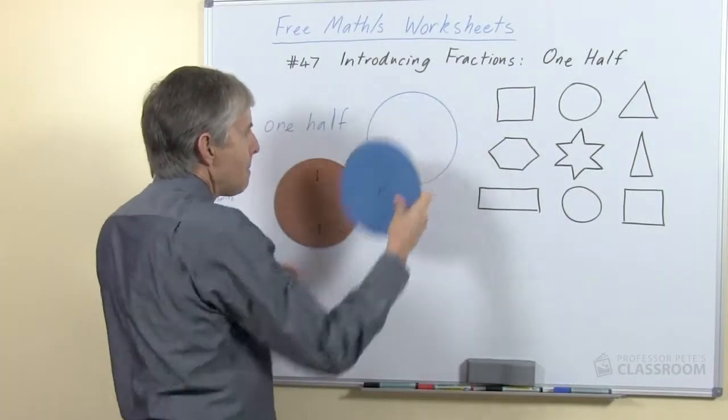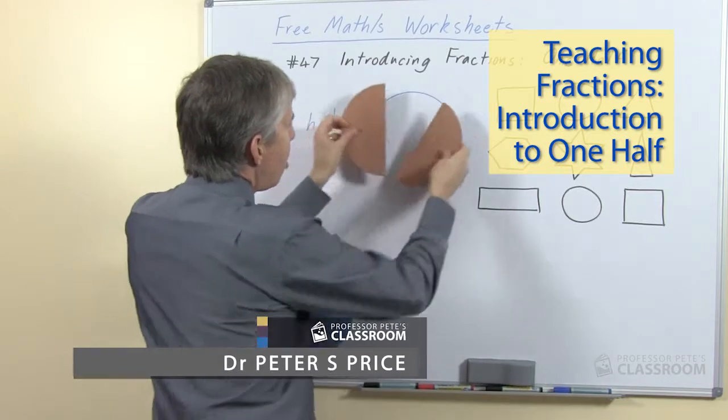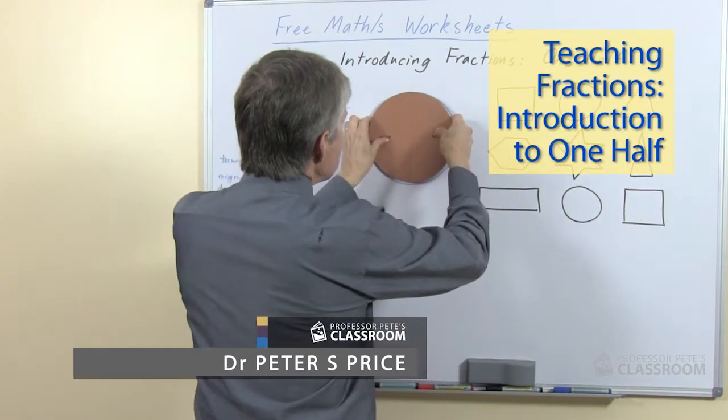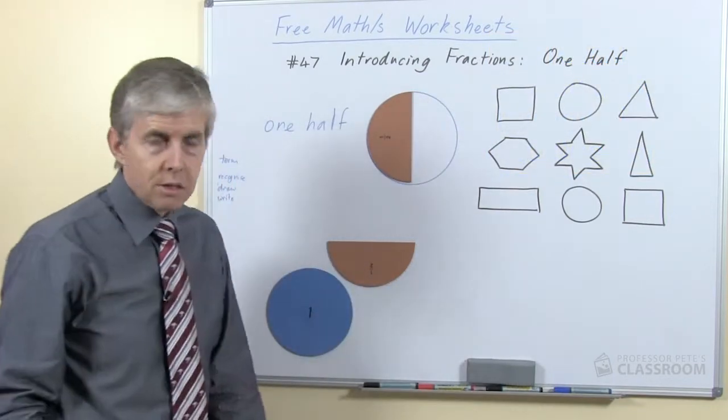We start with the idea that we have a whole of some sort, and within the whole we have two pieces. This fraction model lets us display this very neatly—two pieces that are equal in size.